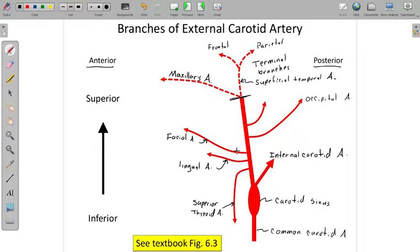So superior thyroid, lingual, and facial. The posterior branches are the occipital artery, back of the skull, and the posterior auricular, around the back of the ear. We don't do much with those. That takes care of the two posterior branches, five branches total.